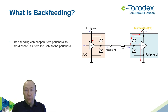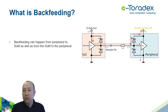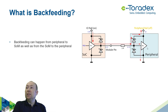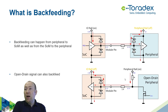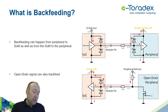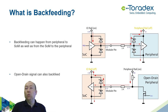When the module is the output and the peripheral is turned off, you can also get residual voltage backfeeding to the peripheral rail. You can also have backfeeding on open drain signals when you have a pull-up resistor that's still pulled up while everything else is off. The pull-up resistor itself limits the current a little, so it's less of a problem than a regular push-pull output.